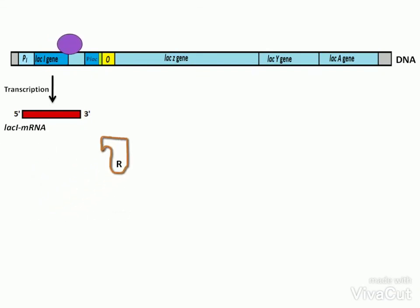This repressor protein binds to the operator region. This binding blocks the RNA polymerase from downstream movement. As a result, the structural genes cannot be transcribed, so no proteins are formed.